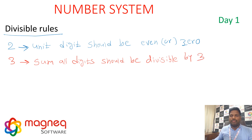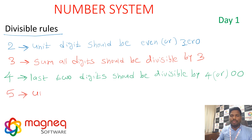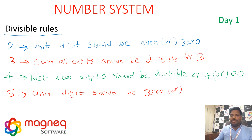Next, the rule for 4: the last two digits should be divisible by 4, or the number ends with 2 zeros. Next, the rule for 5: the unit digit should be 0 or 5.